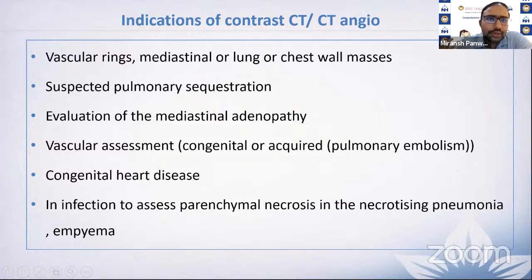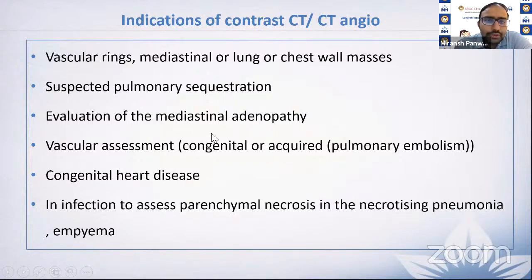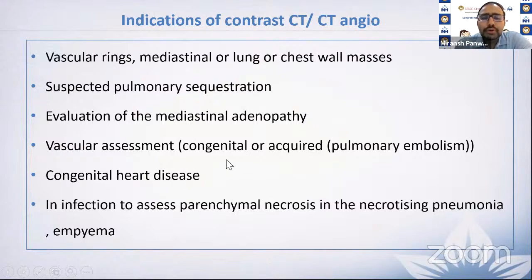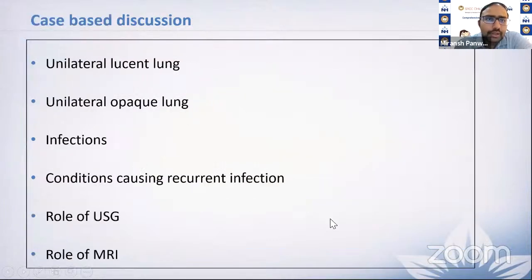When to do contrast CT or CT angiography: for vascular rings, mediastinal lung or chest wall masses (any masses require contrast), anomalous vessels, pulmonary sequestration (to visualize aortic supply), mediastinal adenopathy (better depicted with contrast), pulmonary embolism, congenital vascular malformation, congenital heart disease assessment (routine at this hospital with rapid opacification of all chambers), and parenchymal necrosis evaluation.